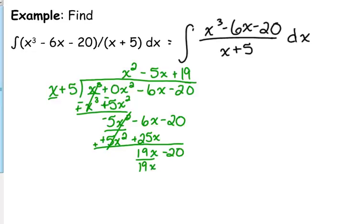Multiply. 19 times x is 19x. 19 times 5 is 95. Change the signs and add. This is our rewritten rational expression. So that is what we're going to integrate now.